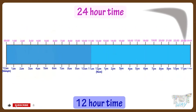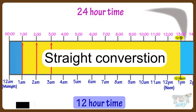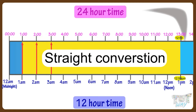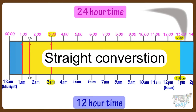From the time 1 a.m. to 12:59 p.m., it is a straight conversion from 12-hour clock system to 24-hour clock system — we just need to remove the a.m. or p.m. symbol. For example, 1 a.m. is 1 o'clock, 1:30 a.m. is 1:30, and 3 a.m. is just 3 in the 24-hour clock system. The same is true up to 12:59 p.m.